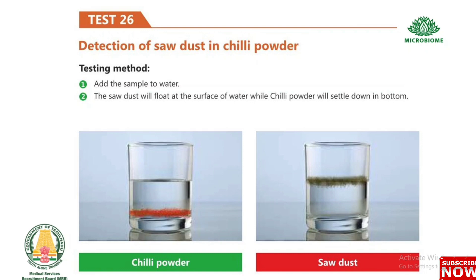Test 26: Detection of sawdust in chili powder. Add the sample to water. The sawdust will float at the surface of the water, while chili powder will settle down at the bottom.